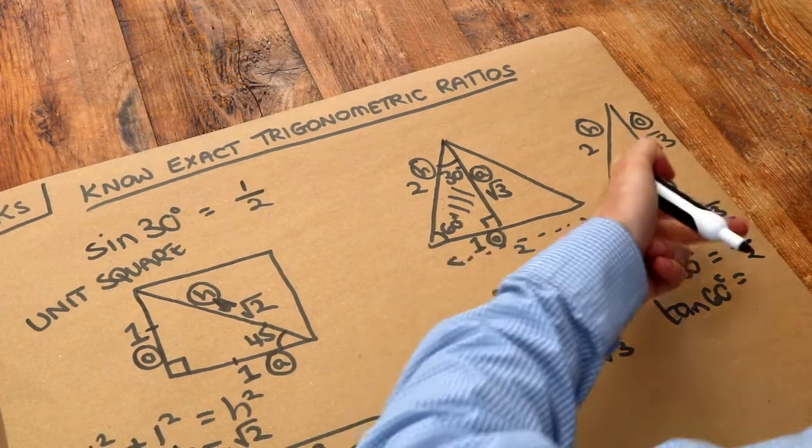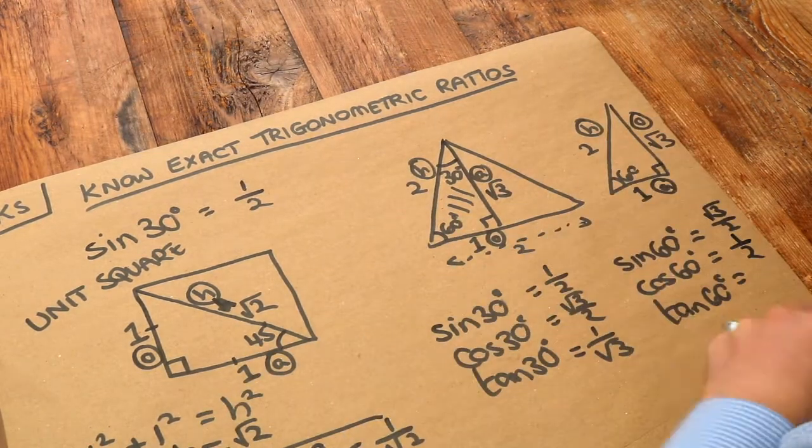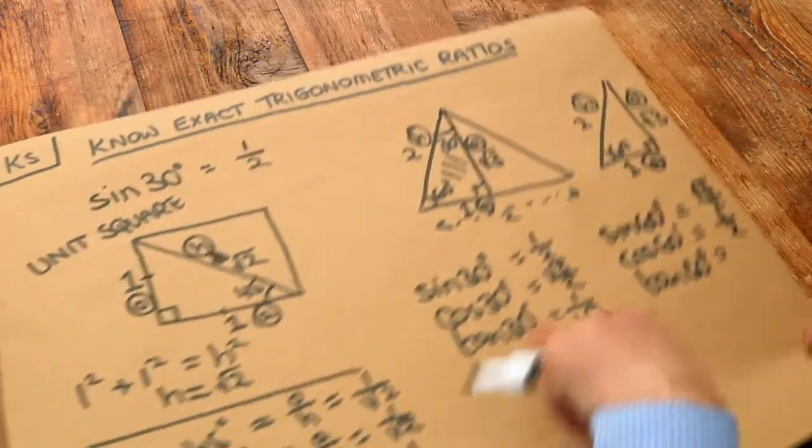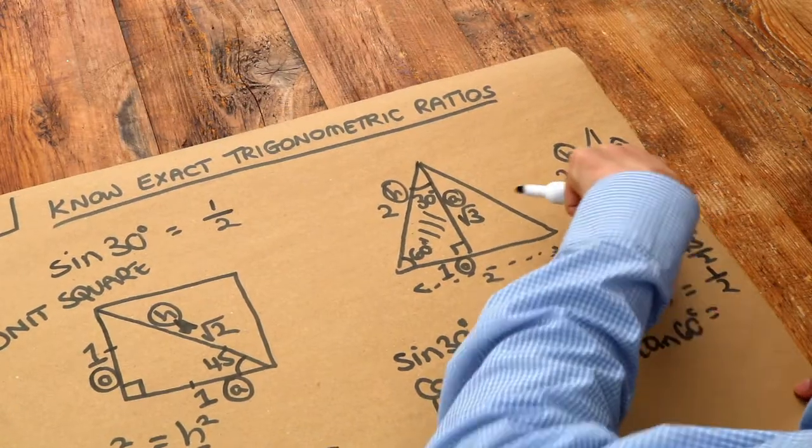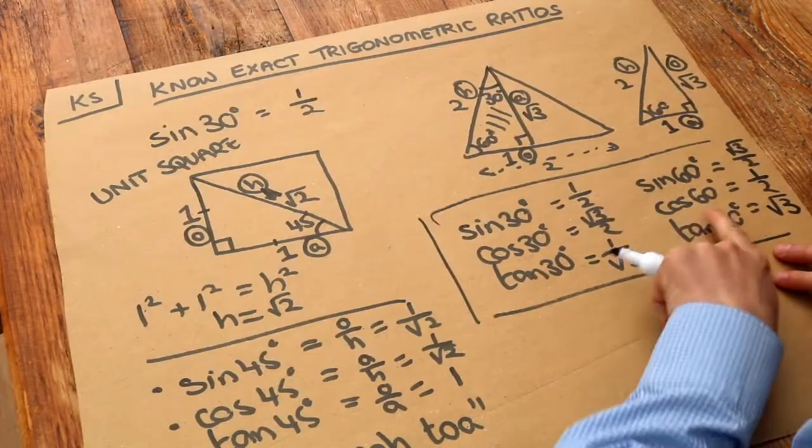So you can see it's the same as here, but swapped round. And then finally, tan of 60 is O over A, so O over A, root 3 over 1, which is root 3. And there we go.